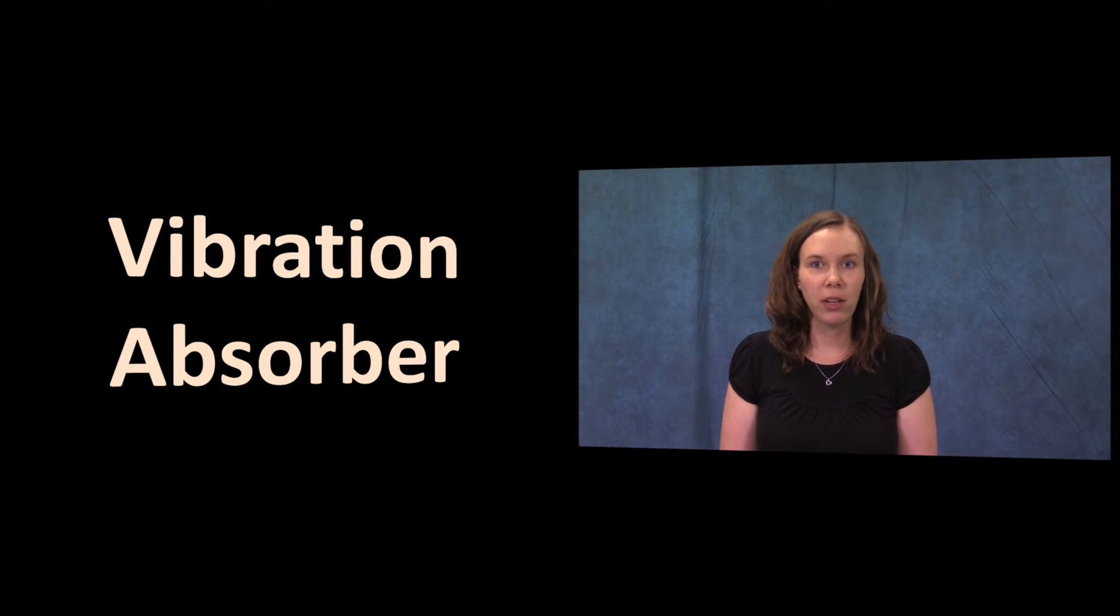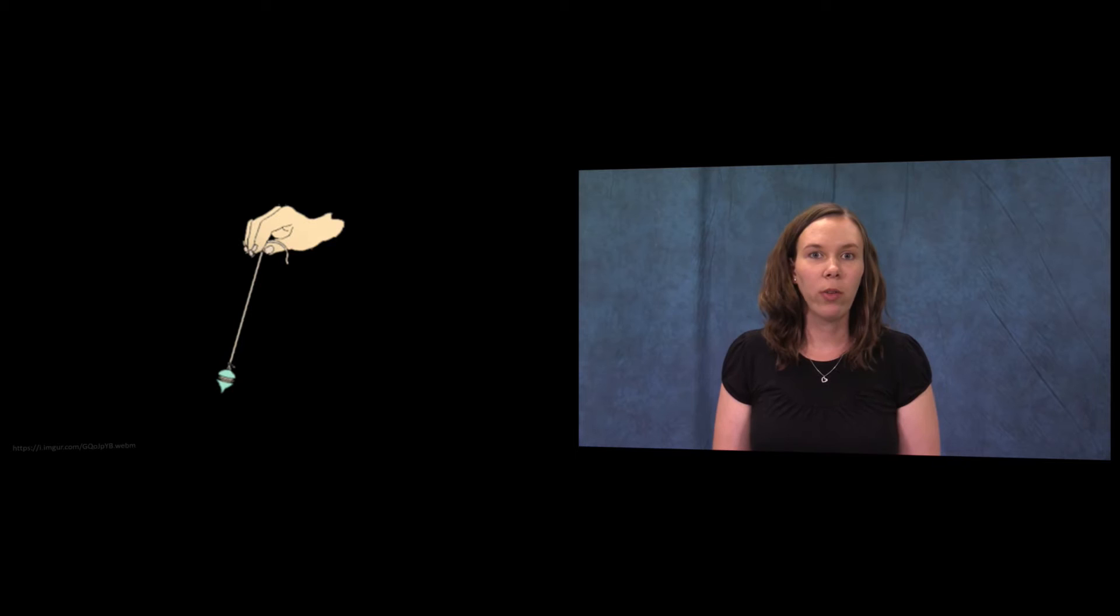One type of vibration absorber is a pendulum, a long rope with a heavy ball attached to the bottom. When attached to an object, the ball oscillates back and forth and absorbs the motion of the object it is attached to. Hence the name, vibration absorber.